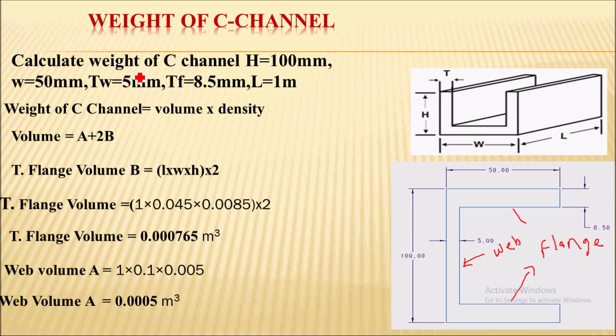Let's go into the example. Calculate weight of C channel: H=100mm, w=50mm, Tw=5mm (web thickness, shown over here), Tf=8.5mm (flange thickness, shown over here), and total length L=1m.